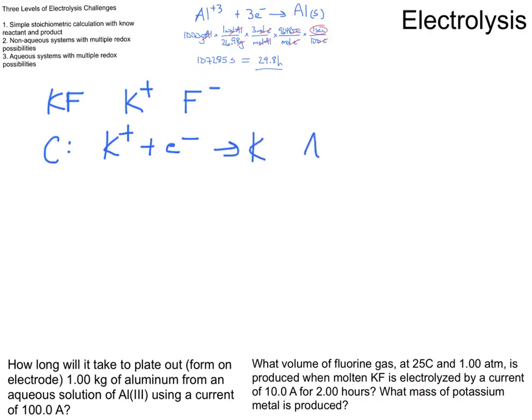And my anode chemistry is going to be the oxidation of the fluoride. The fluoride is going to get oxidized to, and I'll just balance it this way, a half a mole of F2 plus an electron. I balanced the anode reaction using a half so that my moles of electrons in the cathode compartment and the anode compartment are both equal, or both one in this particular case.